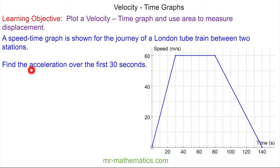So now we're asked to find the acceleration over the first 30 seconds. Acceleration is a measure of speed divided by time. You can see the time is 30 seconds, and over these 30 seconds it increases to 60 meters per second. So our acceleration is 60 divided by 30, which is 2.